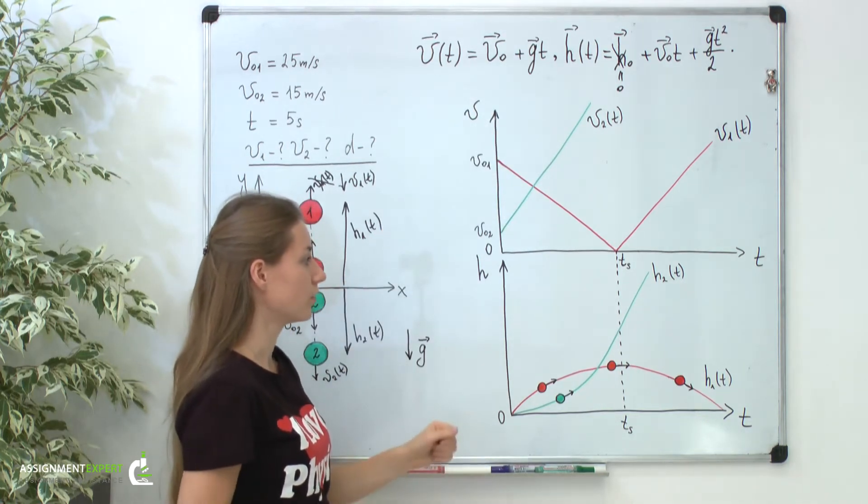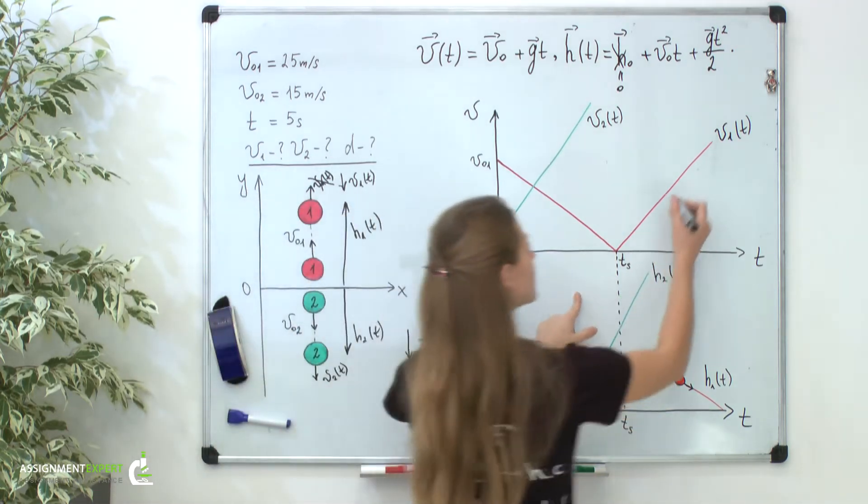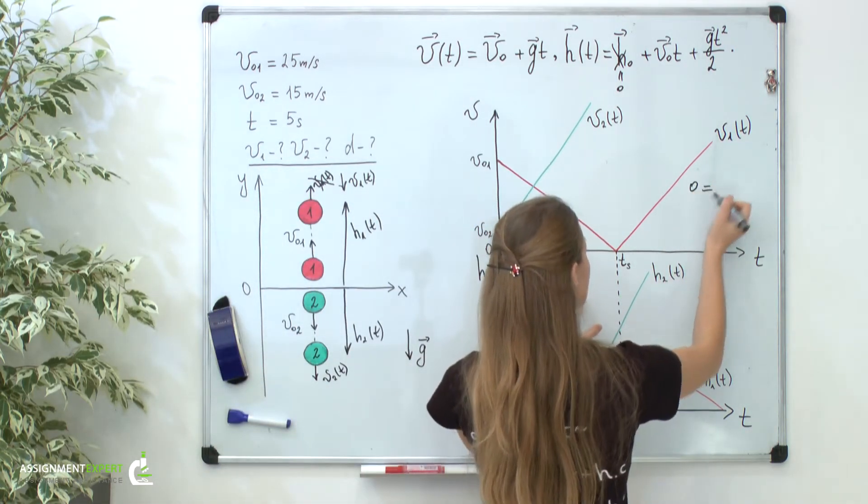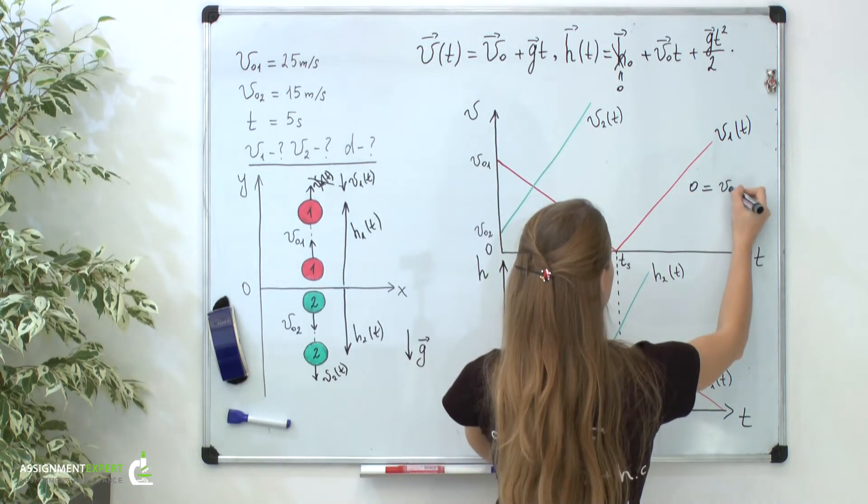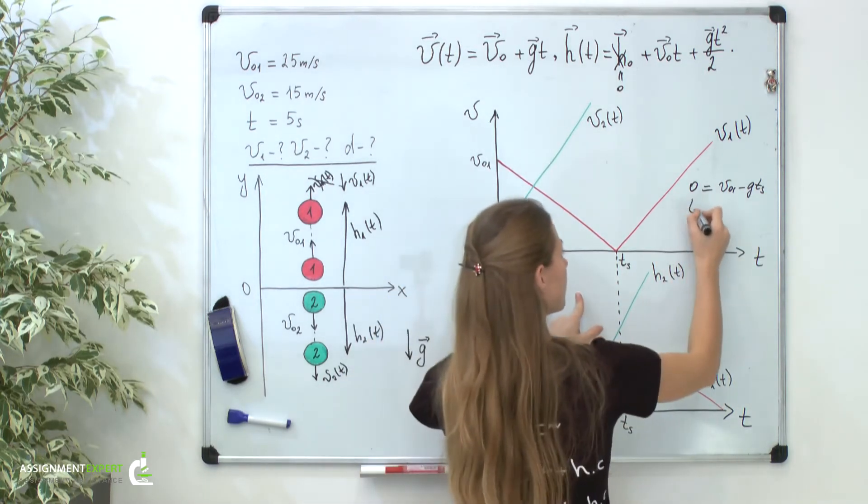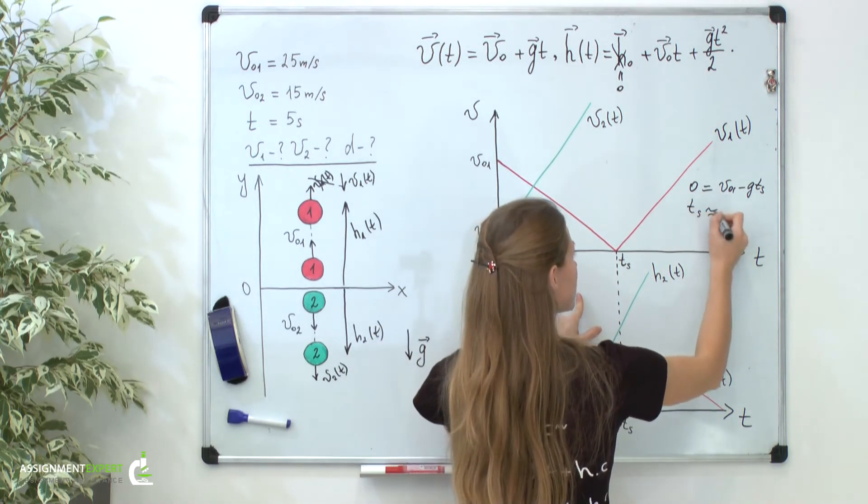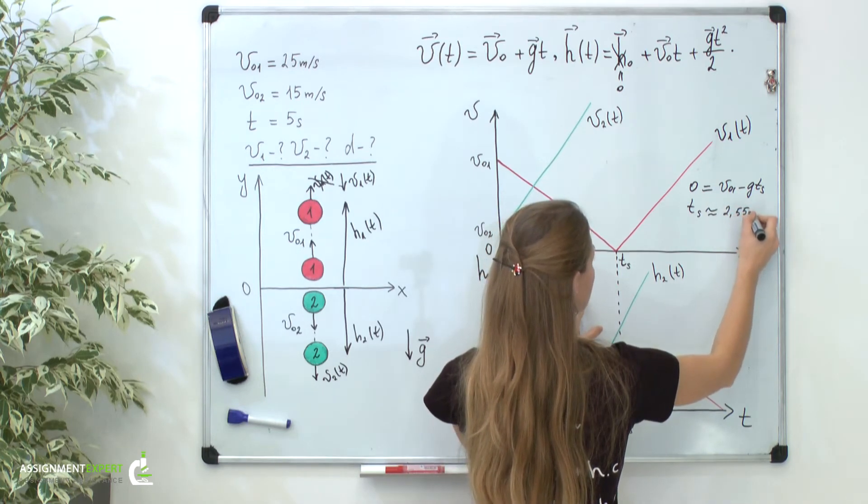If we write down the following: we know that at this point this velocity is zero. So we write down on the left zero. Zero is equal V01 minus Gt at the time of stop. From this formula we can extract this time ts which is approximately 2.55 seconds.